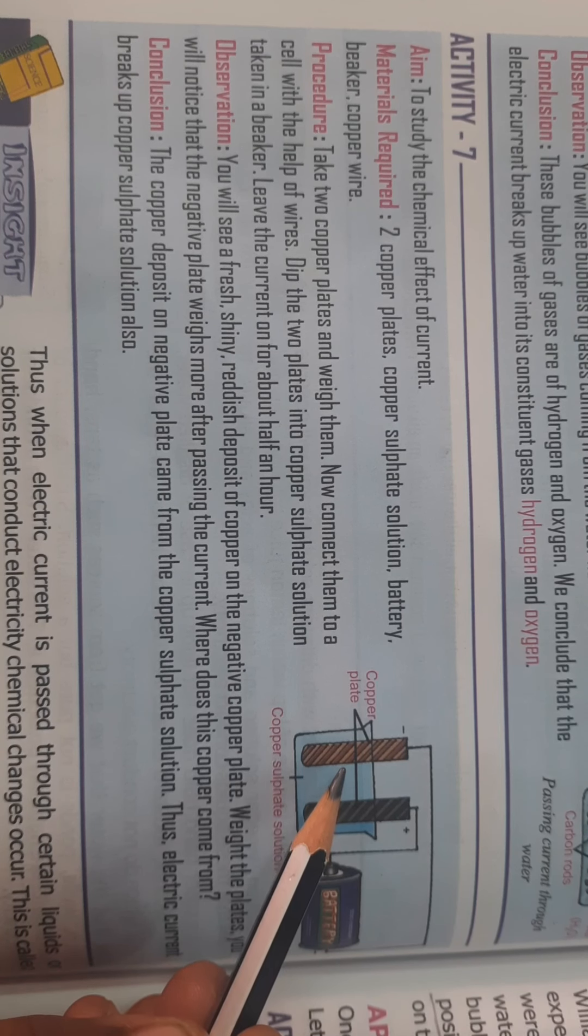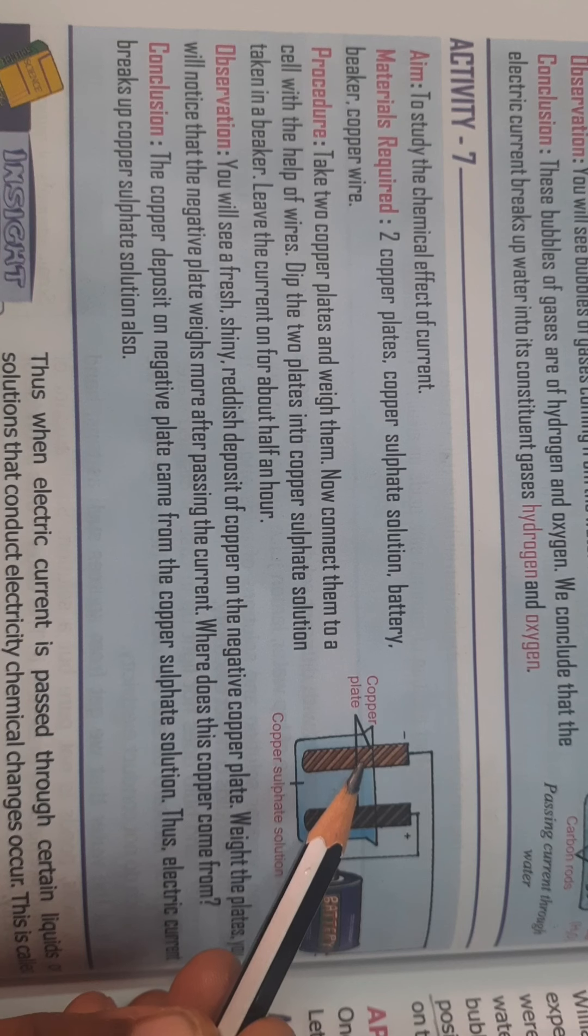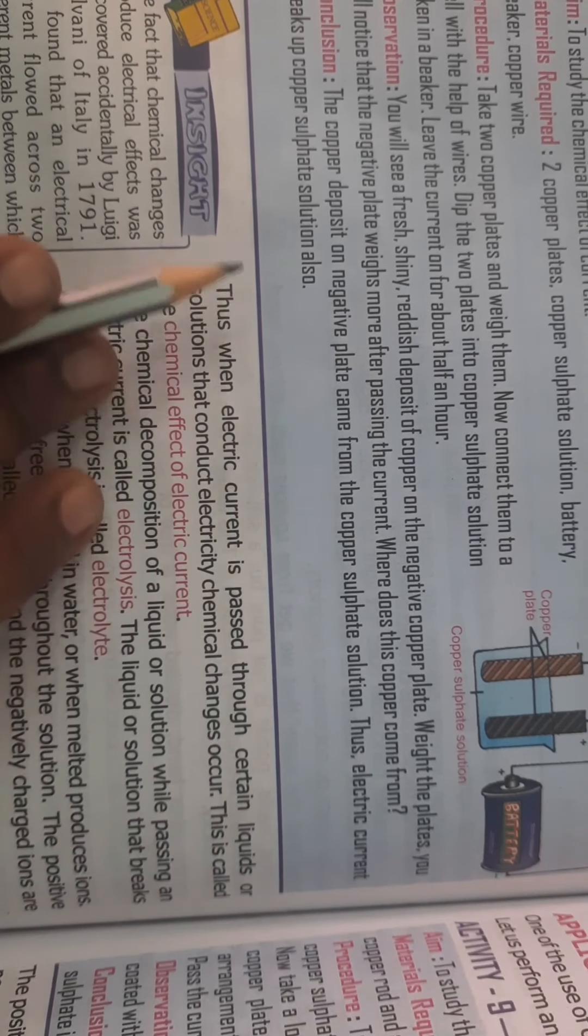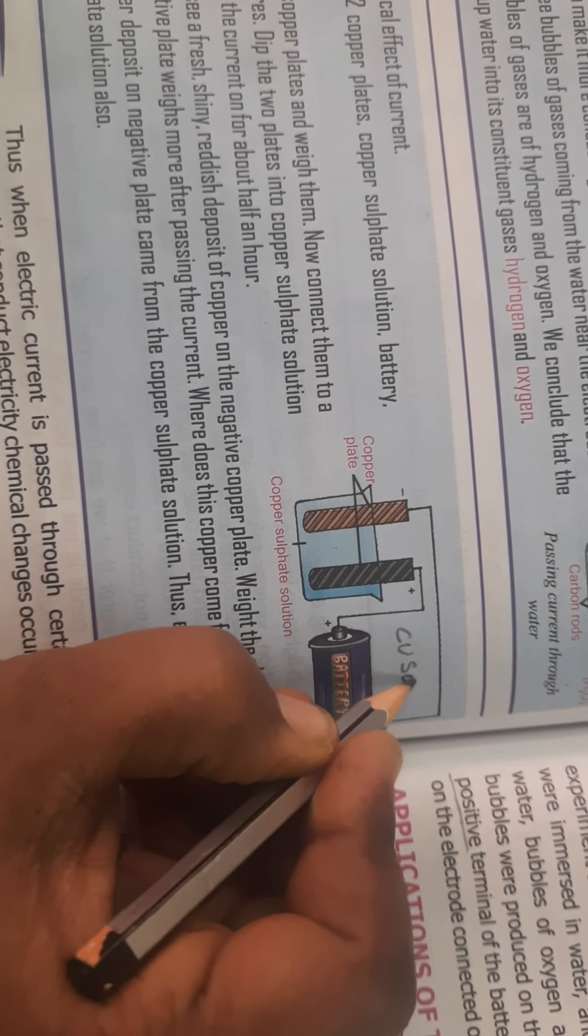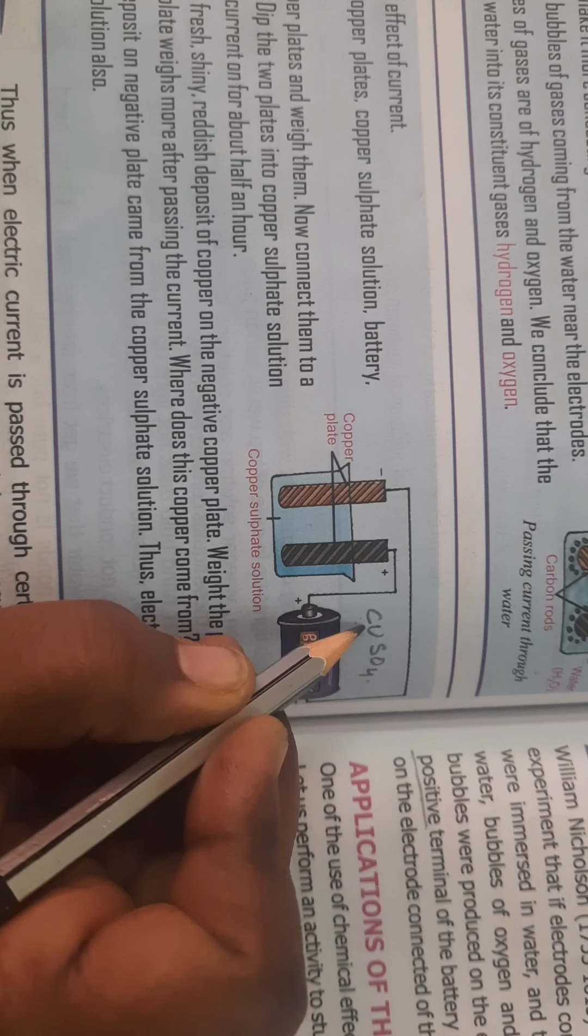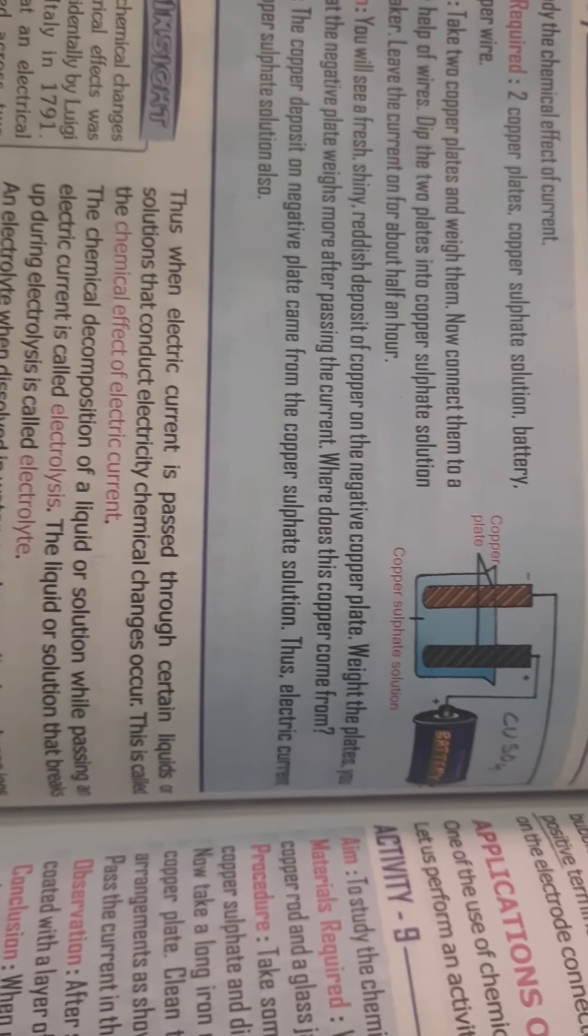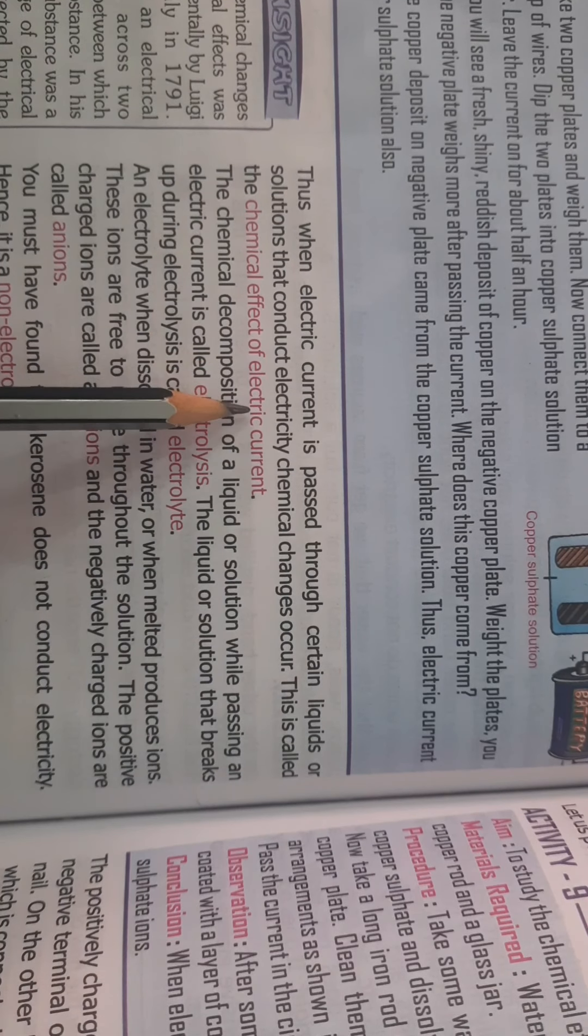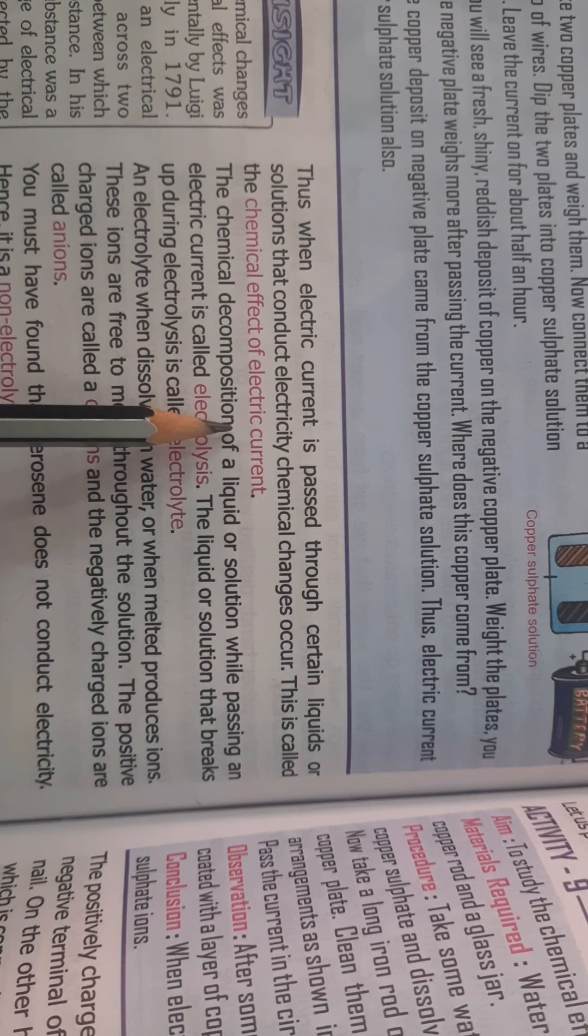What happened is that the copper came and deposited on the negative plate. This shows that electric current breaks up the copper sulfate solution. Copper sulfate, the formula is CuSO4, has broken into copper and sulfate, and the copper got deposited on the negative plate. So whenever electric current is passed through certain liquids or solutions that conduct electricity, some chemical changes occur. This is called the chemical effect of electric current.